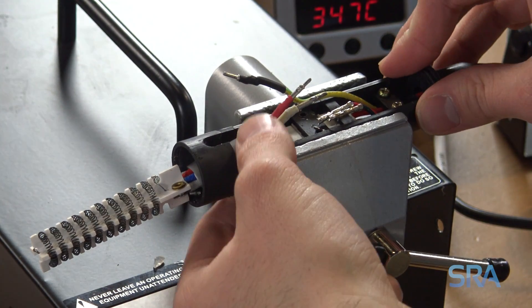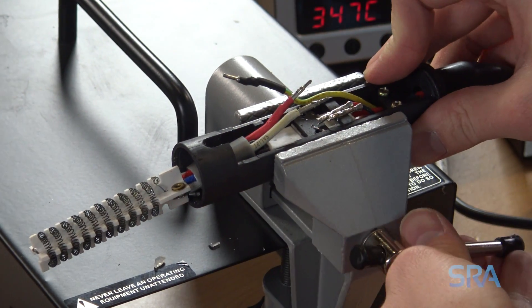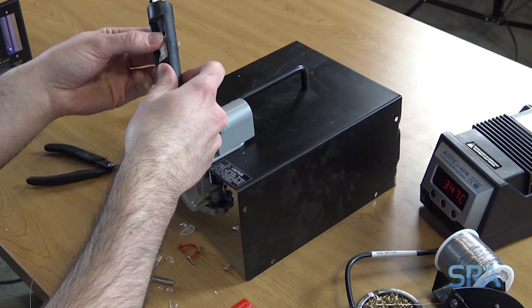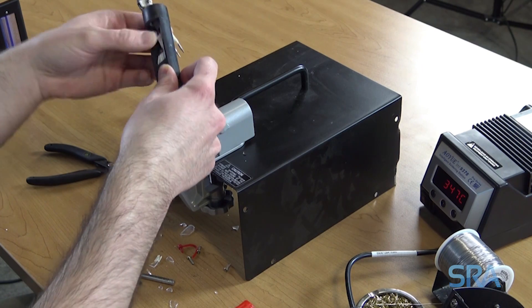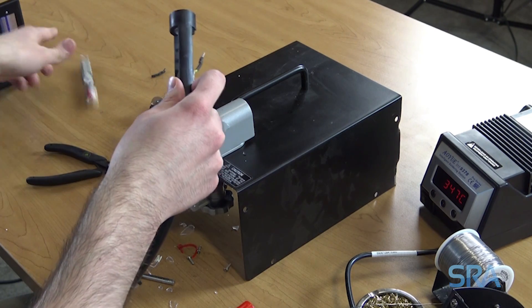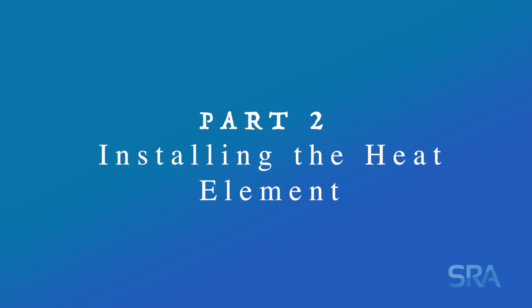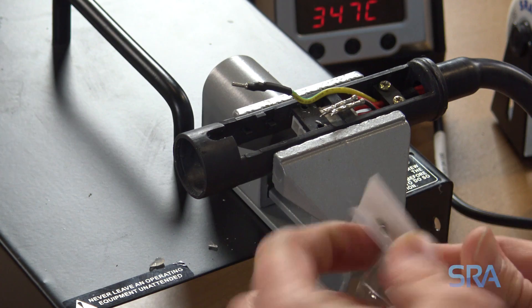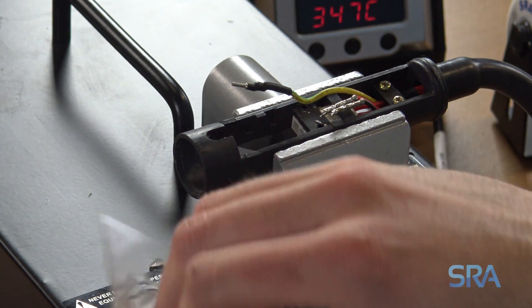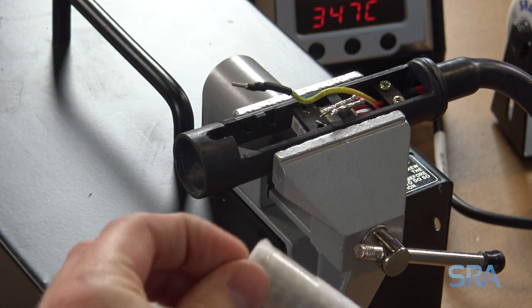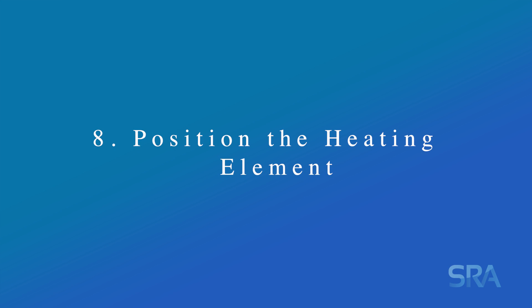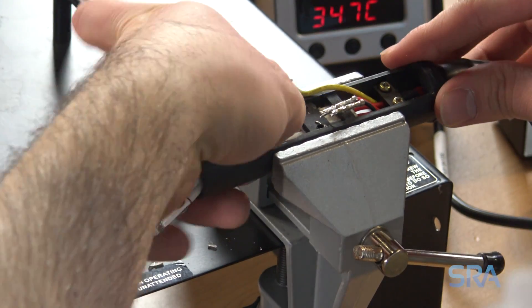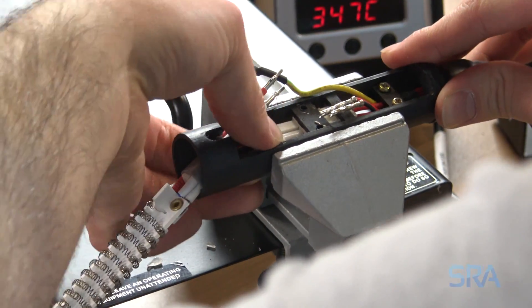All we have left here is this white plastic connector on the bottom. We're going to clip that. Now we're going to get our replacement heating element and put that in.